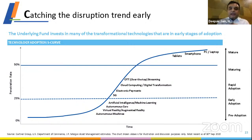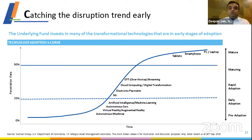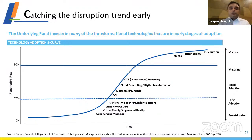JP Morgan tries to identify companies at an early adoption stage — not pre-adoption, because some innovations may take a very long time to fructify. They want to invest in technologies with a large addressable market and a sustained competitive advantage. For example, tablets, smartphones, and PCs are no longer early or disruptive. What is disruptive today is 5G, OTT, and cloud computing. The fund also has a strong exit strategy — when a technology nears maturity or major adoption, they exit and look for newer opportunities.